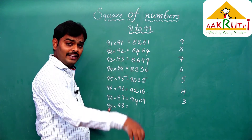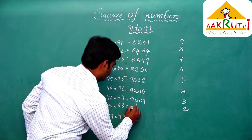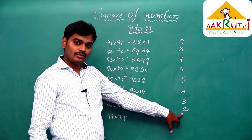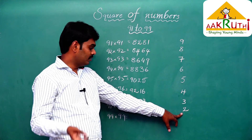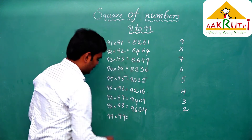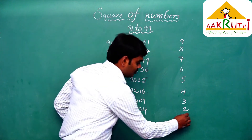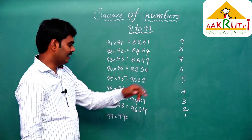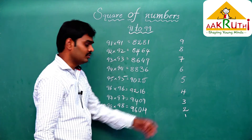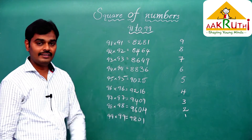Now 98 into 98: 98 is 100 minus 2. The first step is 98 minus 2, which is 96. The second step is 2 squared, which is 04. So 98 squared equals 9604.